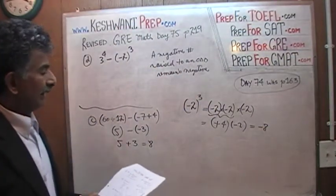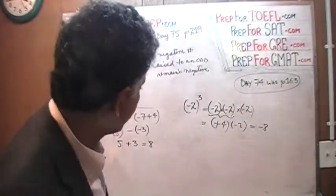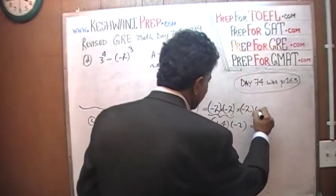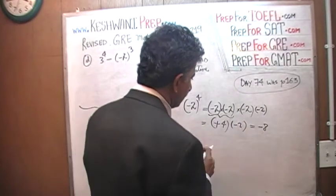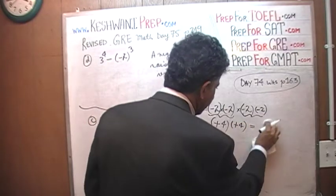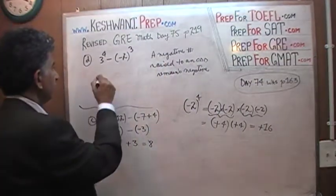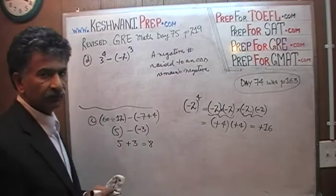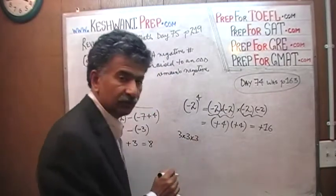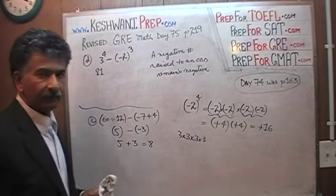Had it been negative 2 raised to a 4th power — an even power — it would have become positive. Had it been 4th power instead of 3rd, negative 2 times negative 2 times negative 2 times negative 2: the first pair gives positive 4, the second pair gives positive 4, and we would have had positive 16 instead of negative 8. Now, 3 raised to the 4th power: 3 times 3 is 9, 9 times 3 is 27, and 27 times 3 is 81.